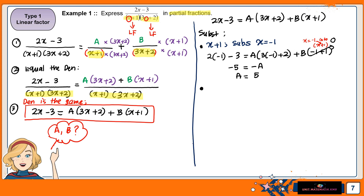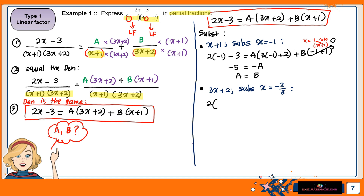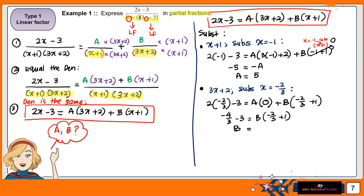Next, we look at the other factor, 3x plus 2. If we set 3x plus 2 equal to 0, we get x equal to negative 2 over 3. Substituting x = -2/3 into our equation: the left side gives 2(-2/3) minus 3, which is negative 4/3 minus 3. The A term becomes 0. Then B times (-2/3 plus 1). Calculating, we end up with B equal to negative 13.